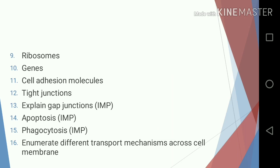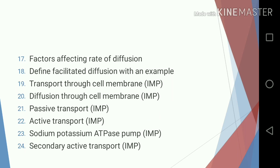Eleven, cell adhesion molecules; twelve, tight junctions; thirteen, gap junctions; fourteen, apoptosis; fifteen, phagocytosis; sixteen, enumerate different transport mechanisms across cell membrane; seventeen, factors affecting rate of diffusion; eighteen, define facilitated diffusion with an example; nineteen, transport through cell membrane; twenty, diffusion through cell membrane; twenty-one, passive transport; twenty-two, active transport.